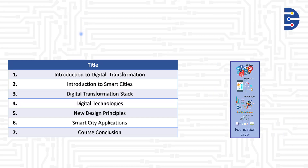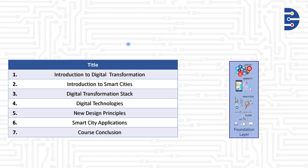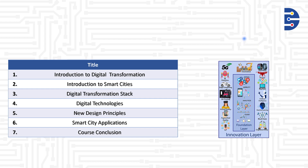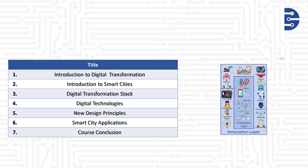We will then look at the digital technologies that make up the digital transformation stack. We will be looking at 15 different technologies as the innovation layer, namely: big data, automation, robotics, augmented reality, virtual reality, 3D printing, internet of things, wearables, machine learning, artificial intelligence, drones, blockchain, cryptocurrency, 5G, and edge computing.